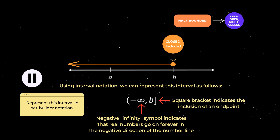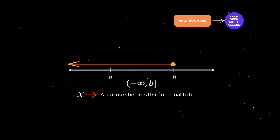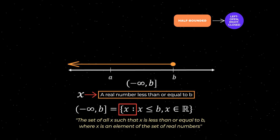To represent this interval in set builder notation, we first define a variable X as a real number less than or equal to B, and then we build the number set using curly brackets as shown here. Therefore, this half bounded left open right closed interval in set builder notation can be described as the set of all X such that X is less than or equal to B, where X is an element of the set of real numbers.